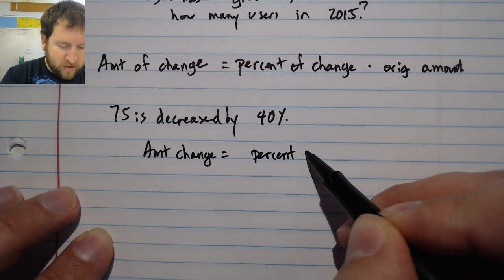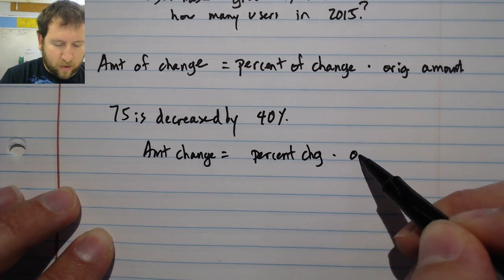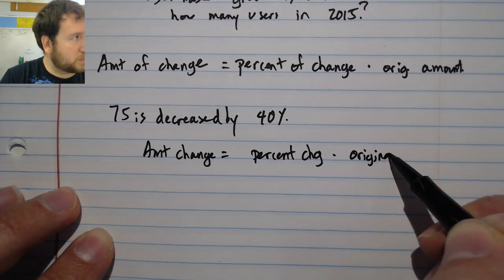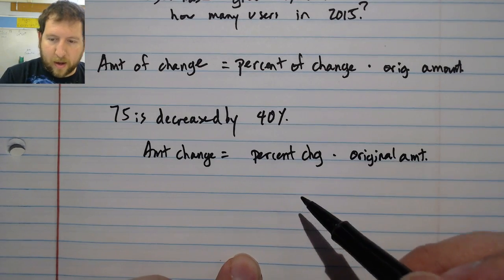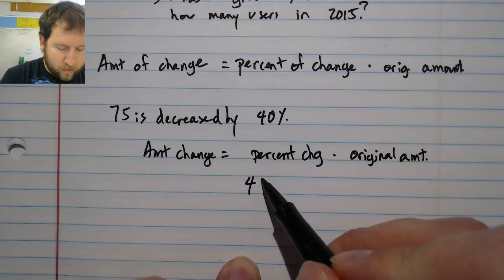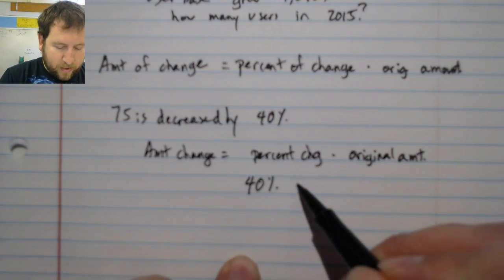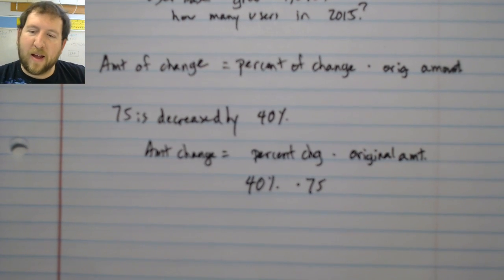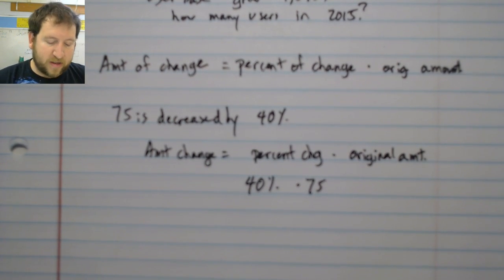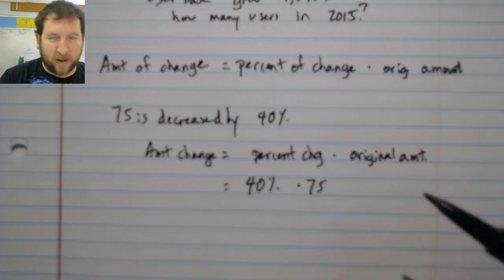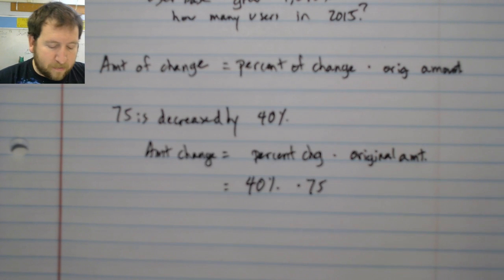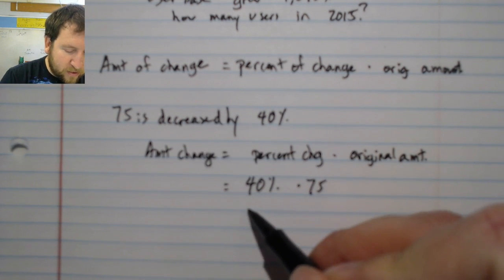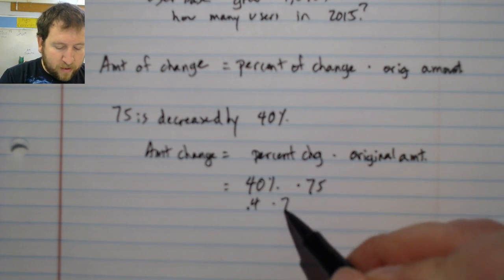We have our amount of change equals percent change times the original amount. I have my 40 percent times 75. I don't really want to use 40 percent in my math because it doesn't mean anything, so I'm going to turn that into a decimal. I'm going to move the decimal place two places over, so I have 0.4 times 75.